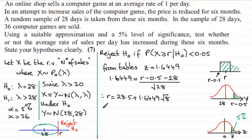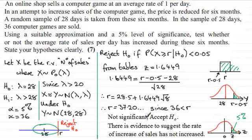Now when I compare the observed value of 36 to our critical value of 37.20 here, I can see 36 is to the left of it, so it's not in the reject the null hypothesis region. So it's not significant. Since 36, our observed value, is less than the critical value, the conclusion I draw is that it's not significant—we accept the null hypothesis, and there is evidence to suggest that the rate of increase of sales has not increased.